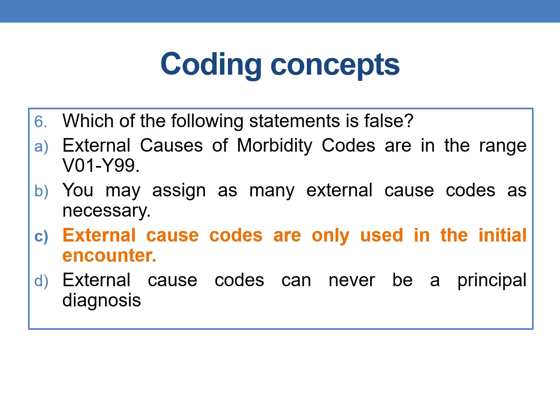Coming to the next question: which of the following statements is false? Option A is external causes of morbidity codes are in the range V01 through Y99. Option B is you may assign as many external cause codes as necessary. Option C is external cause codes are only used in the initial encounter.